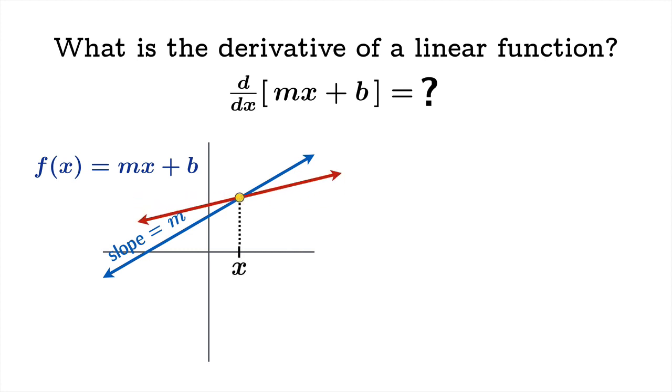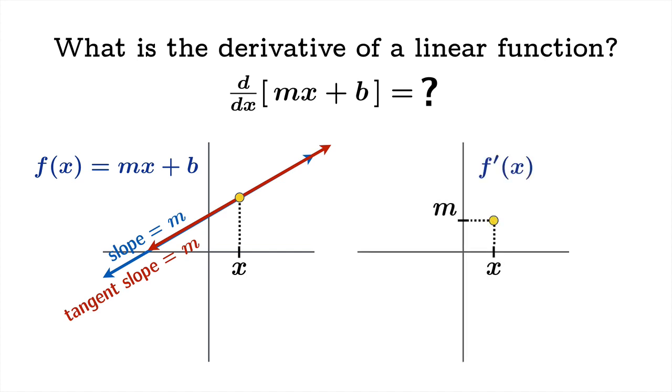So if you ask yourself what the tangent slope should be at the argument x, well, intuitively, it seems pretty clear that the tangent slope should also be m. So at the argument x, you would expect the value of the derivative to be m. But of course, this should apply no matter what argument you choose. And so we very much expect the derivative function to be constant. It should have the constant value m, where m is the slope of the original function.